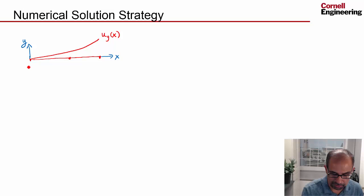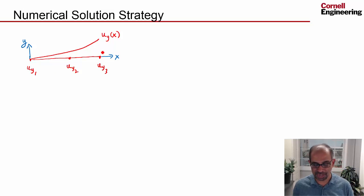And the corresponding values would be UY1, UY2, and UY3. So you would say this is node 1, node 2, and node 3. And these are equally spaced, even though it doesn't look like that in my figure.